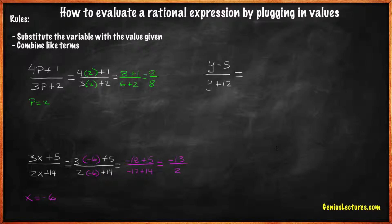Let's try one more. y minus 5 over y plus 12. Find the value when y equals 5. Here, we just need to replace the y with 5. 5 minus 5 over 5 plus 12. 0 over 17 equals 0.